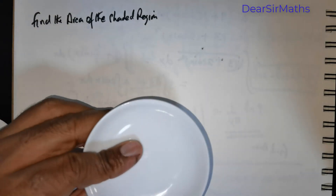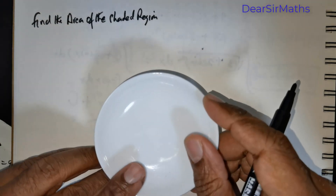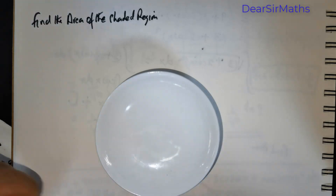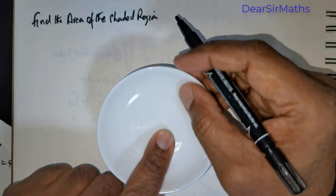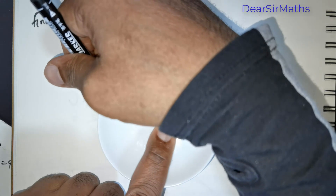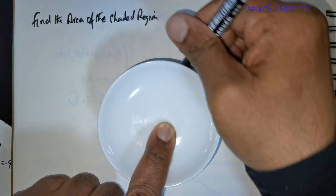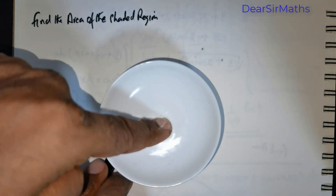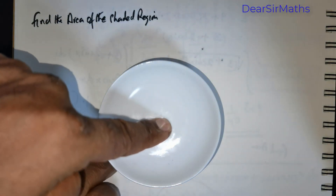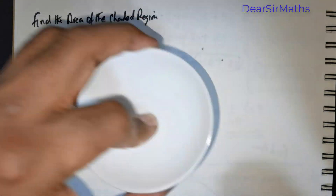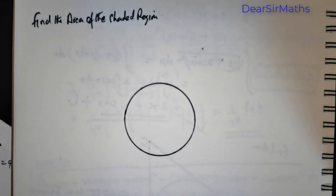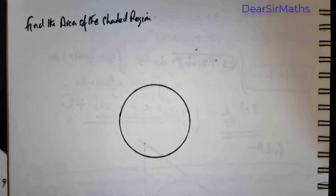Good day everybody. This is a very beautiful question. In fact, it's an inspiring question. So foremost, what I wish to do is I would like to draw the circle. Now, the circle is inscribed inside a triangle.